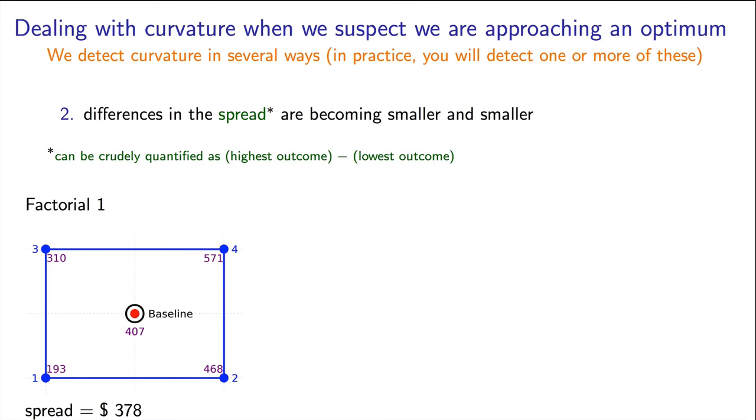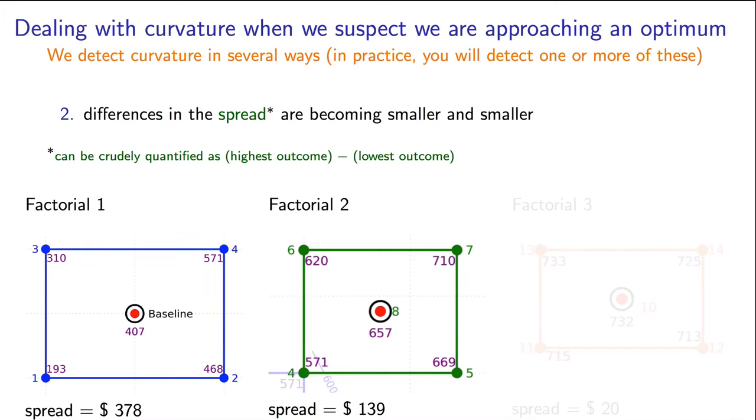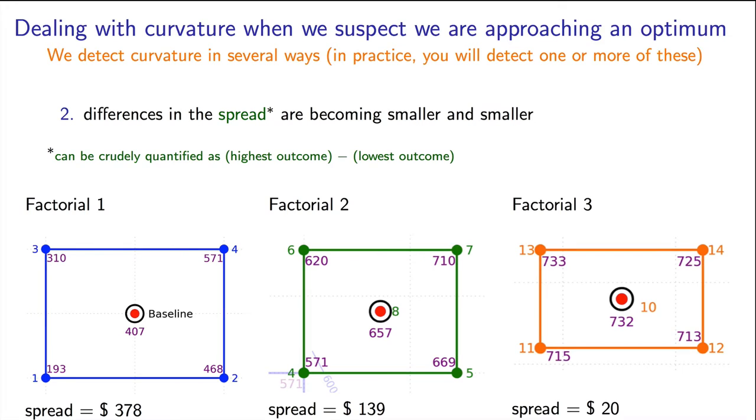The second indication that an optimum is close by is that we are leveling out. Leveling out means that my outcome values in the neighborhood are getting closer and closer, even when I'm taking reasonable step changes. Let's see this. The spread in profit values in the first factorial was around a $300 difference. In the second factorial, that spread was around $150. And now in this third factorial, my spreads are only $15 to $20. We're not making the gains we had made earlier. And if we're not careful, we can be affected by noise. If we don't know the level of noise around us, we might be misled. How do I know whether that spread of $15 to $20 is any different to the noise in the system?